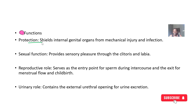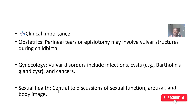The functions of the vulva include protection — it acts as a shielding protective layer for the internal organs. It also has a sexual function, a reproductive role where the vaginal opening is located, and a urinary role where the urethral opening allows for urination.